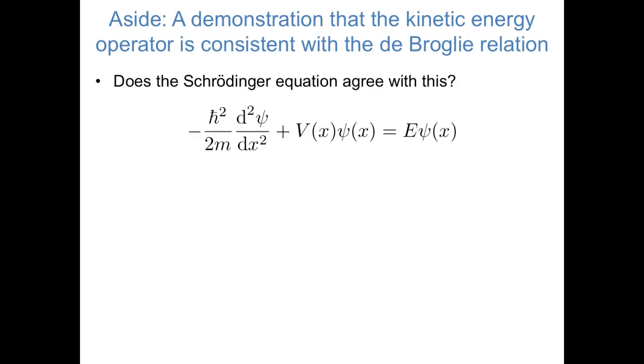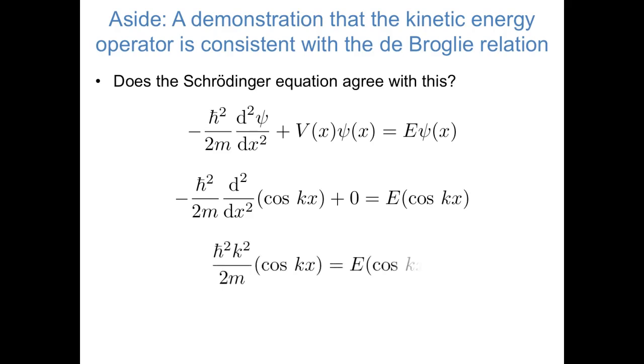In general, the Schrödinger equation in one dimension looks like this. We're interested in the case where psi of x equals cosine kx, and v of x equals 0. In that case, the Schrödinger equation becomes this. Hopefully we remember that the second derivative of cosine kx is negative k squared cosine kx, in which case our equation simplifies further, and if we compare the two sides of that equation, we can see that h bar squared k squared over 2m equals e.